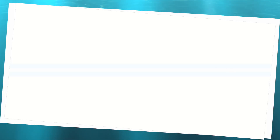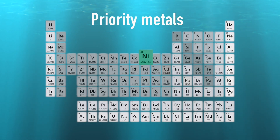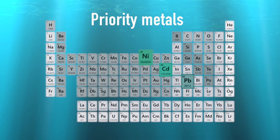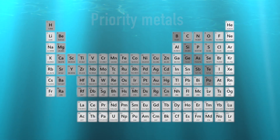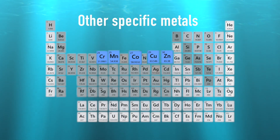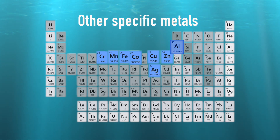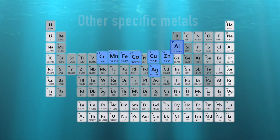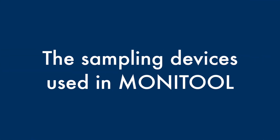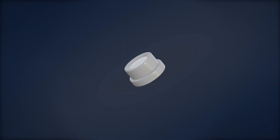What is Monotool? Monotool is a European project whose objective is to adapt existing Metal Water Environmental Quality Standards for passive sampling devices, thus allowing their use to evaluate the chemical status of waters under the WFD. The passive sampler devices used in Monotool are the DGT.